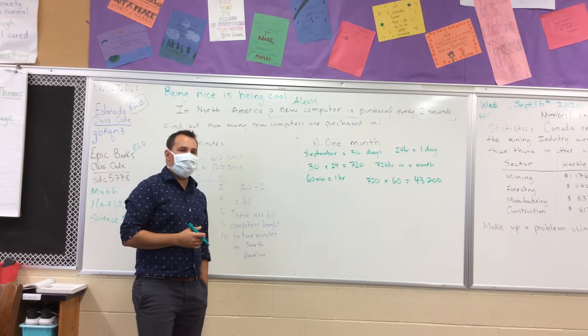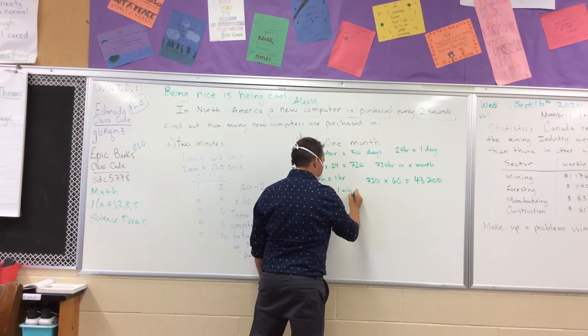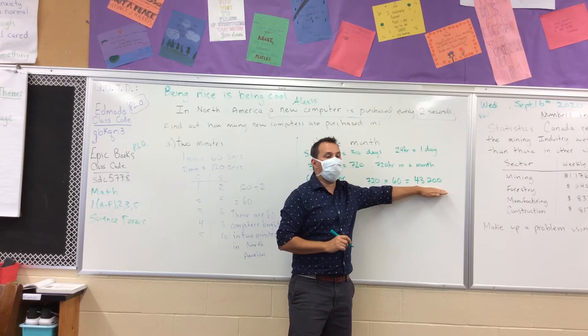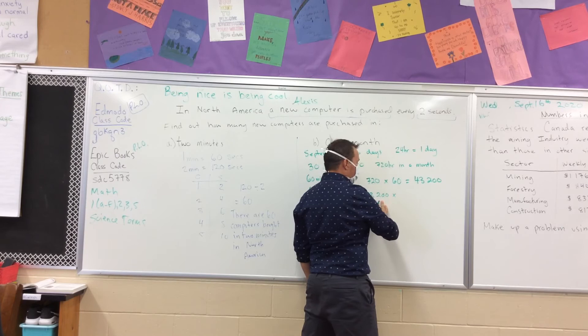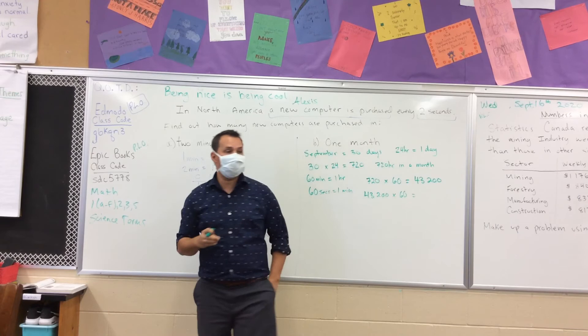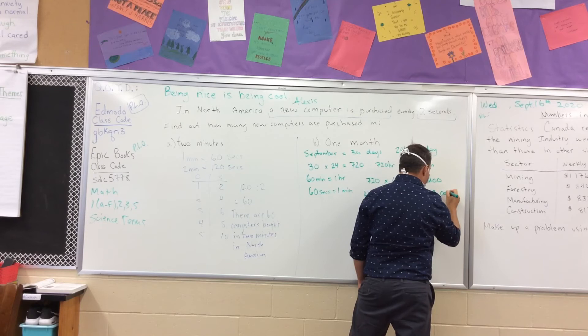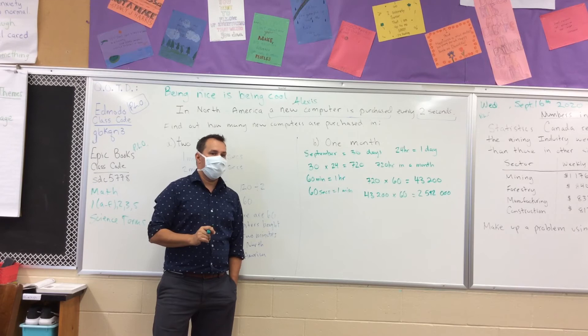How many seconds are there in a minute? 60 seconds equals one minute. To find how many seconds are in a month, we take our 43,200 minutes and multiply by 60. That gives us 2,592,000. So in one month, you're going to have 2,592,000 seconds.